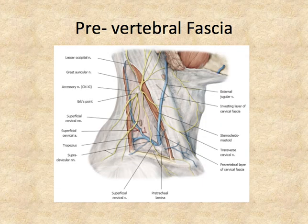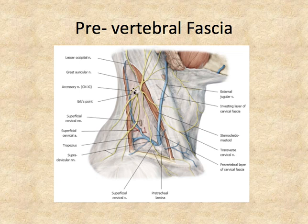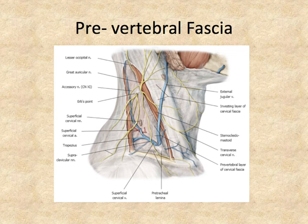This is what it looks like when approaching the prevertebral fascia from a lateral side. You can see that the investing layer of fascia is more superficial, lying on top of the sternocleidomastoid and trapezius. If you cut away the investing fascia, you'll see many structures deep to it — nerves and blood vessels you'll dissect in lab. The floor of the posterior triangle of the neck is formed by the prevertebral fascia, the white layer visible in this triangle.